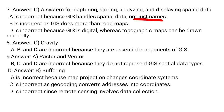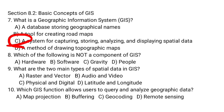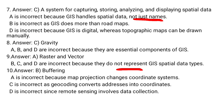For question 8, Gravity is not a component of GIS — C is the correct answer. Hardware, software, and people are all components of GIS. For question 9, raster and vector data are the two main types of spatial data in GIS — A is the correct answer. For question 10, Buffering is the GIS function that allows users to query and analyze geographic data — B is the correct answer. Map projection changes coordinate systems, geocoding converts addresses into coordinates, and remote sensing involves data collection.